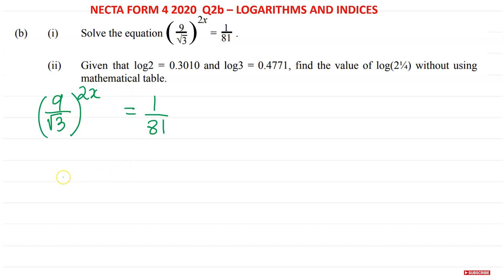So what do we do? We need to think about writing all the numbers on the same base. That's what we do when we deal with indices. I have a clue here because I have this 3. I'm going to think: how can I write 9 as powers of 3? How can I write 81 as a power of 3?